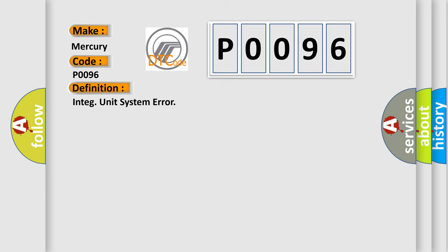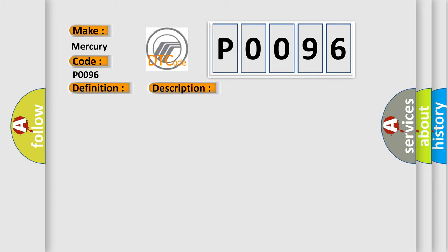The basic definition is integrated unit system error. And now this is a short description of this DTC code: memory read out error in body integrated unit.